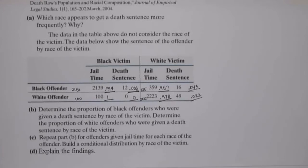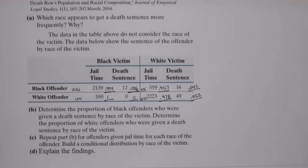So to explain the findings: initially it appeared that white offenders got the death sentence more frequently, because 2.1% of white offenders got the death sentence versus 1.1% of black offenders. However, when we introduced the race of the victim, the association inverted — it reversed, and black offenders incurred the death sentence more frequently, both for black victims and for white victims. This is the idea of Simpson's Paradox: if you look at the data one way you get one relationship, but when you introduce another variable, it gives an inverted relationship from what you saw originally.